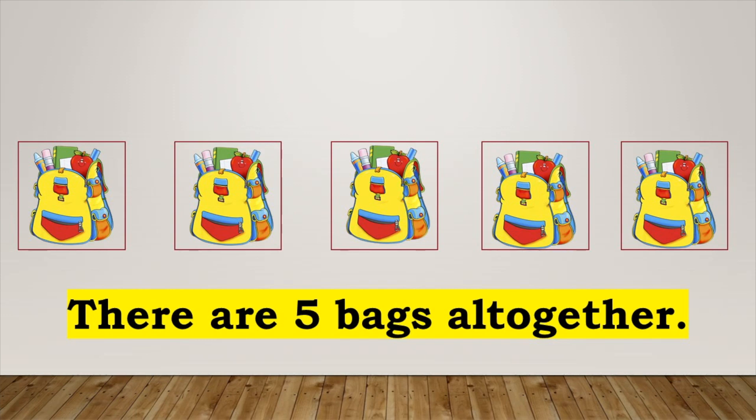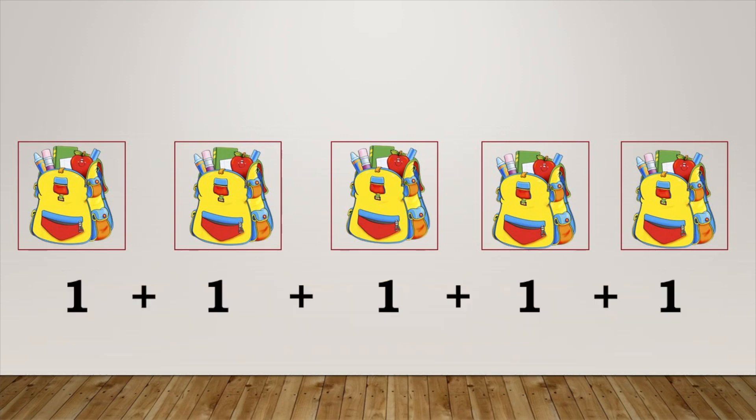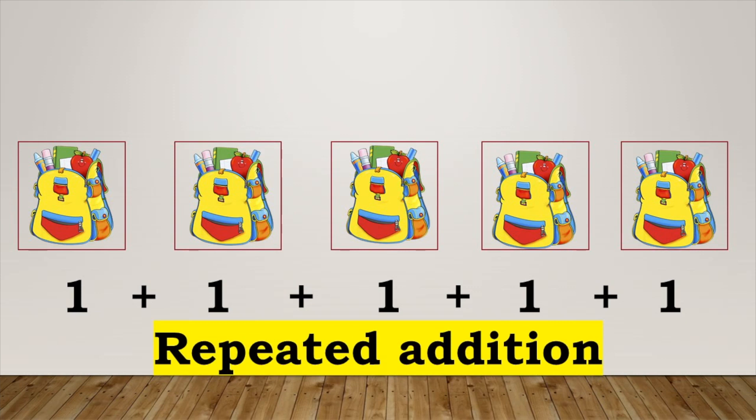What did we just do? We added the number of pictures. What did you notice while adding the pictures? You saw the same number added over and over again. This is called repeated addition.